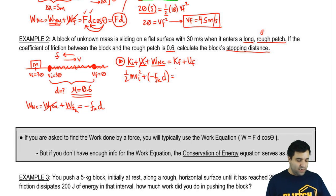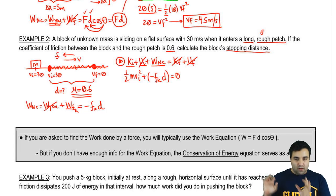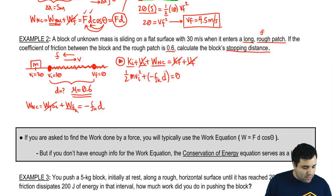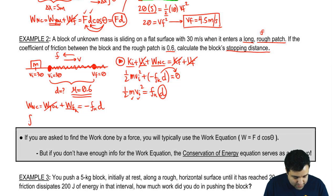Is there a kinetic energy at the end? The answer is no, because it comes to a stop. Is there potential at the end? There's no potential at the end because you're still in ground level. So you get this interesting thing where there's a bunch of stuff on the left, and then the right is a zero. That might seem weird at first, but I can move this to the right, and then I have positive equals positive. So half m v squared equals friction d. We're looking for d, we're trying to solve for distance.